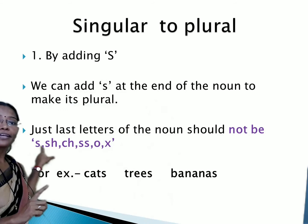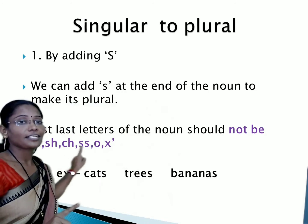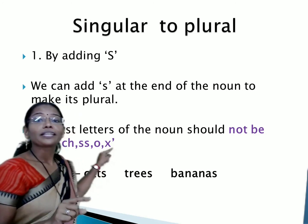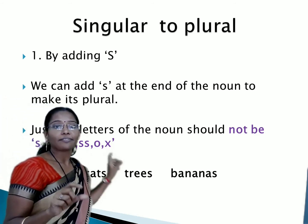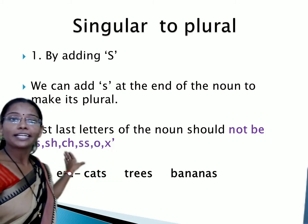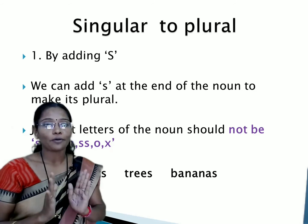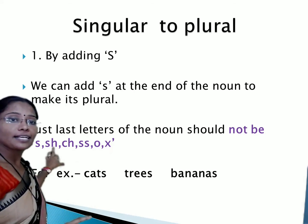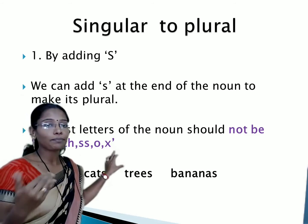The noun, when we are adding S, should not end with S, sh, ch, double S, O, or X. Whichever noun we are writing in plural, it should not end with these letters — then only we can add S there and make its plural. If the noun ends with these letters, then what to do? For that we have a next rule that we will see afterwards. Just take care: when making plural of a noun, check the ending letter — it should not be S, sh, ch, double S, O, or X. Then we can add only S and it will be plural.